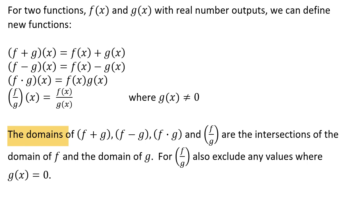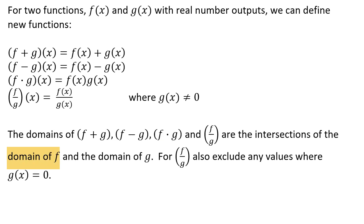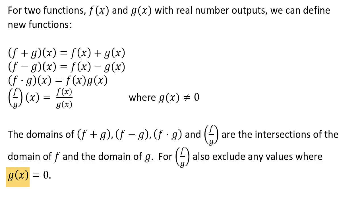The domains of these functions — f plus g, f minus g, f times g, and f divided by g — are the intersections of the domain of f and the domain of g. But in the case where f is divided by g, we must exclude any values where g equals zero, because we can't divide by zero.